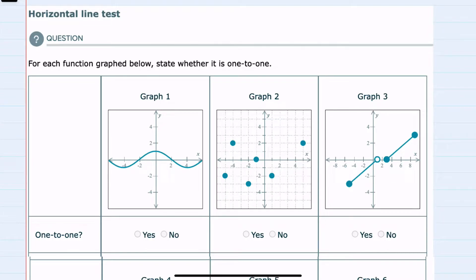In this video I'll be helping you with the ALEKS problem type called horizontal line test. We're given six graphs. We're using the horizontal line test to determine if each of these graphs is one-to-one.